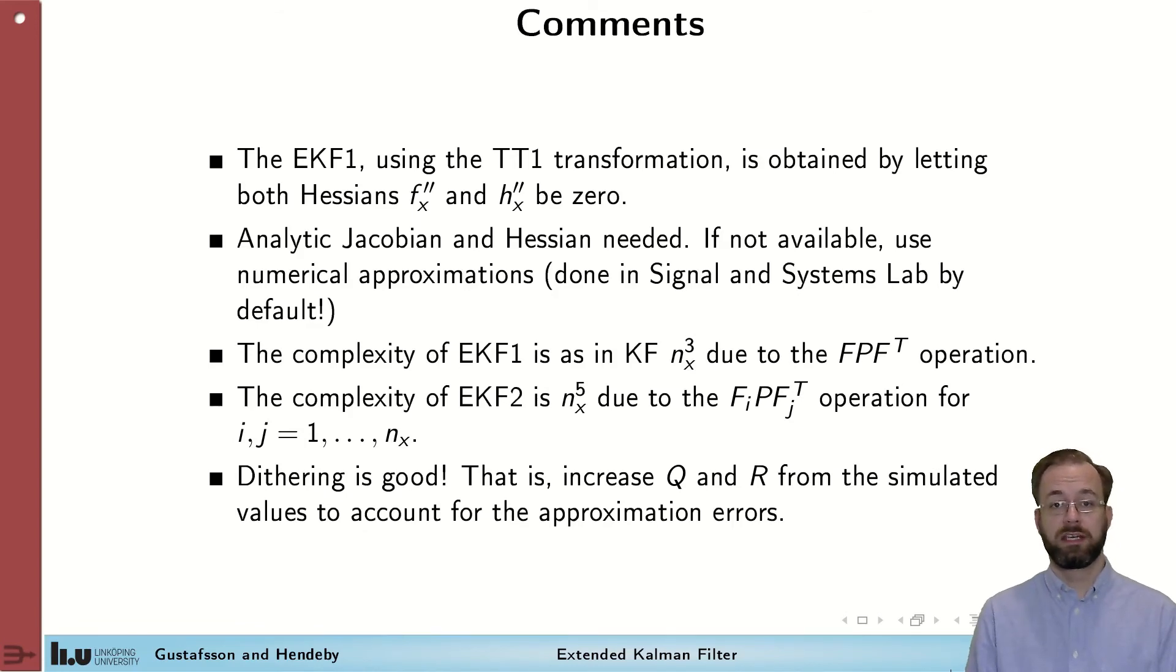The complexity of EKF1 is as in KF n^3 due to the FPF^T operation. The complexity of EKF2 is n^5 due to the F_i P_i F_i^T operation for i,j = 1, ..., n_x. The complete EKF1 has the same complexity as the Kalman filter. It's big O N^3, where N is the dimension of the state, and that is due to the propagation of the covariance matrix in the time update step, which is the dominating term. The same complexity analysis for the EKF2 gives us N^5 complexity, which is again due to the time update step and the propagation of the covariance matrix there. So the EKF2 is actually quite more expensive than the first-order EKF.